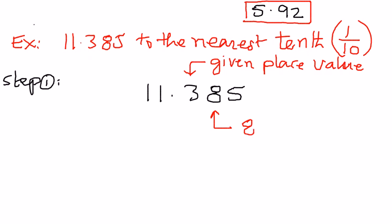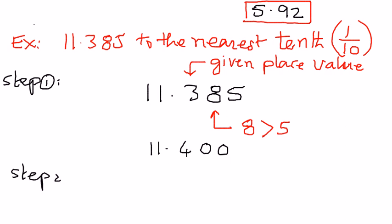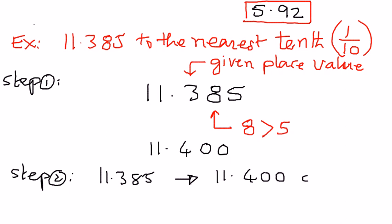Since 8 is greater than 5, we add 1 to 3, giving us 11.400. We added 1 to 3 because 8 was greater than 5, and made the rest of the digits equal to 0. So in step 2, 11.385 rounded to the nearest tenths place is equal to 11.400, or we can simply write this as 11.4. This is our answer.